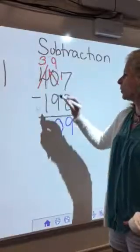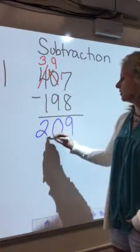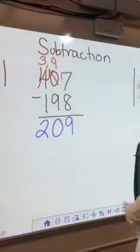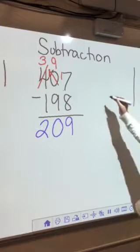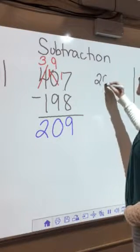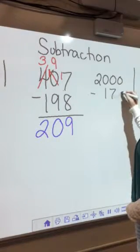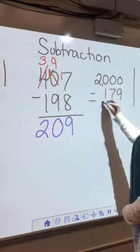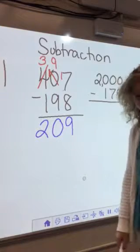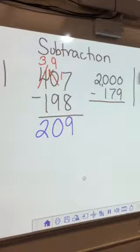And three minus one is two. When you're subtracting across zeros, that's the only part. It's still the same idea. You just have to realize when your neighbor doesn't have anything, you got to keep moving along until you find someone who does.